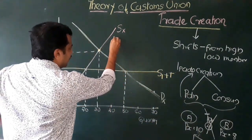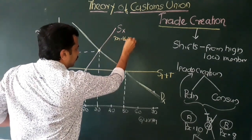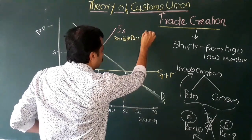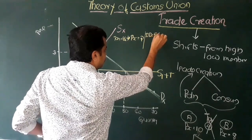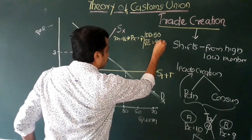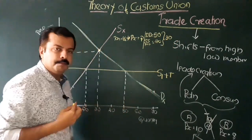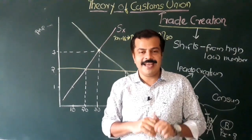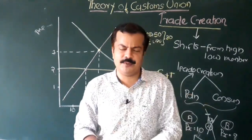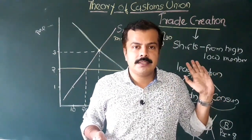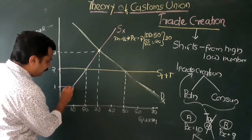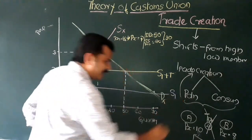Now suppose that Country One and Country Two form some kind of economic integration scheme — for example, a customs union. There will not be any tariff. So our new supply curve will be S1 — the supply curve without tariff. Since the tariff is eliminated, the price of this commodity declines from Rupees 2 to Rupees 1. When there is no tariff, the price is 1.